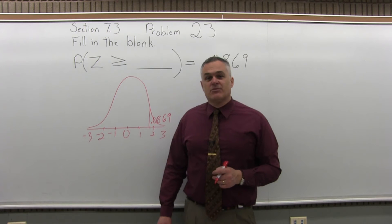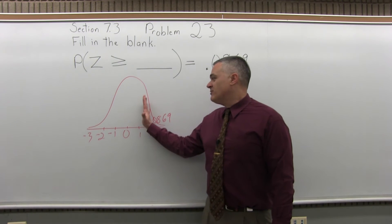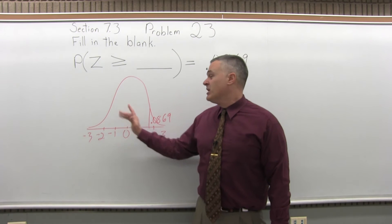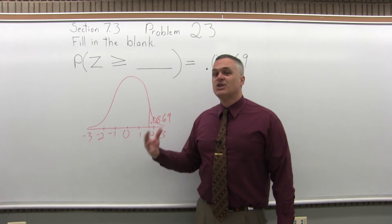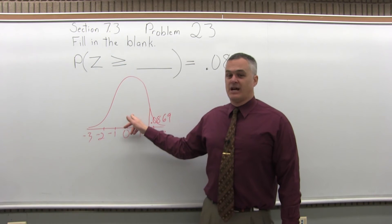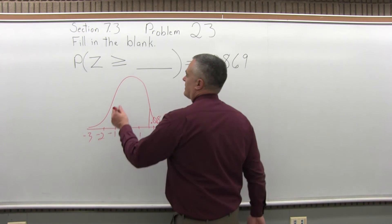Now the way the chart is set up, the chart only tells you the probability of being to the left of or before the value that you look up. So the .0869 is not going to help us. We need to know the value on the other side, the left side, which we can figure out pretty easily.